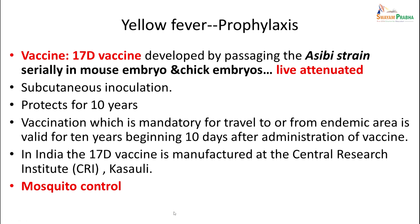For prophylaxis, a very important vaccine exists — the yellow fever 17-D vaccine, produced by passaging the 17D strain serially in mouse embryo and chick embryos. It is a live attenuated vaccine given subcutaneously, and can give protection for up to 10 years. Vaccination is mandatory for travel to or from endemic areas and is valid for 10 years, beginning from 10 days after administration. In India, the 17-D vaccine is manufactured at CRI Kasauli. Another way of controlling the disease is mosquito control.